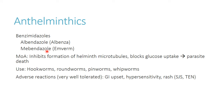Albendazole and mebendazole work by inhibiting the formation of helminthic microtubules and blocking glucose uptake — if the worms can't utilize glucose, they can't generate energy and die. These drugs can be used for roundworms, hookworms, pinworms, and whipworms — they're fairly broad spectrum. They're generally well tolerated with minimal side effects, maybe some GI upset. Rash would be cause for concern, and Stevens-Johnson syndrome or toxic epidermal necrolysis is a theoretical, very rare risk.